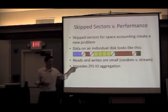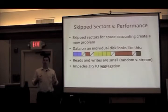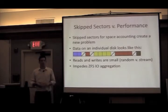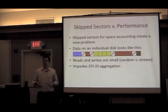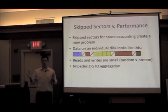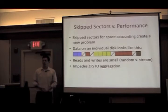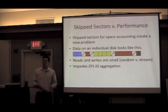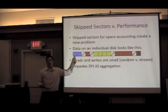In particular, skip sectors impede ZFS's ability to do IO aggregation. Normally ZFS takes random writes and turns them into big streaming writes by taking smaller writes, seeing that they're adjacent, and chunking them up into much larger writes. ZFS tries to write big 128K chunks to disk every time to get maximal streaming performance, but it can't do that when there are skip-sector gaps sitting in between.